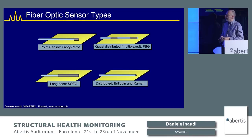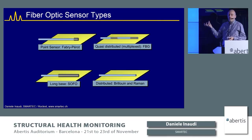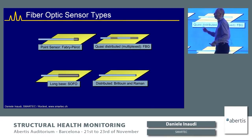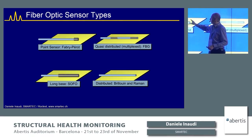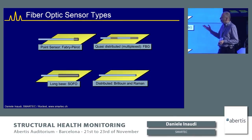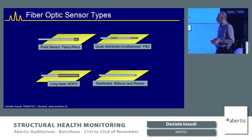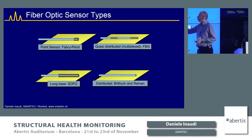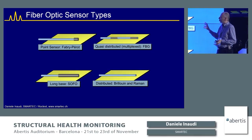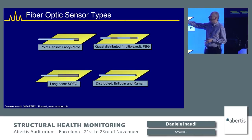I subdivide fiber optic sensors into four main categories. The first is the point sensor, very similar to a conventional sensor like a vibrating wire — measuring at one location, with the optical fiber acting as a wire to bring light from instrument to sensor. The sensor modifies the light and sends it back. An example is the Fabry-Perot technology. The second category is multiplexed or quasi-distributed sensors, such as fiber Bragg gratings — again discrete sensing locations, but multiple sensors along one fiber.